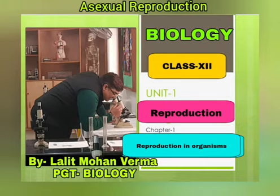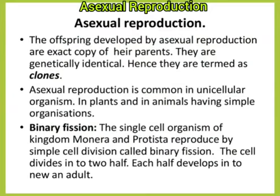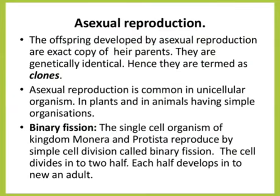today we will discuss asexual reproduction. In asexual reproduction, the offspring developed are an exact copy of their parents. They are genetically identical and therefore they are also called clones. This reproduction is common in unicellular organisms, in some plants and simple organisms.